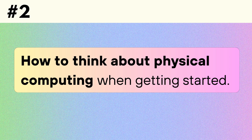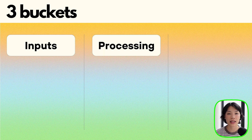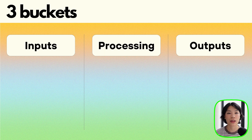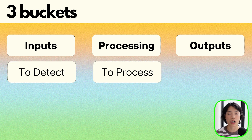How should we think about physical computing as we get started? If you have been following my p5js tutorials, I think that shifting your mindset to physical computing is actually quite intuitive. I would like to put it into three main buckets: inputs, processing, and outputs. And I want to connect three verbs to these three buckets: detect, process, and react.